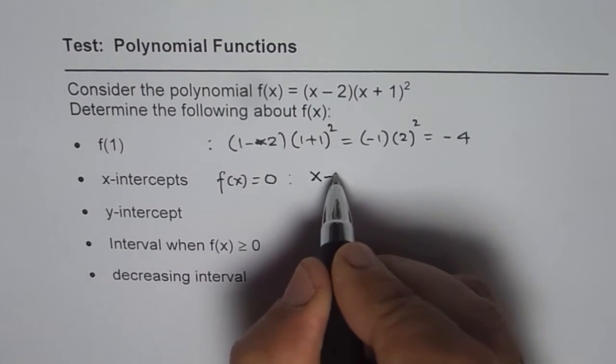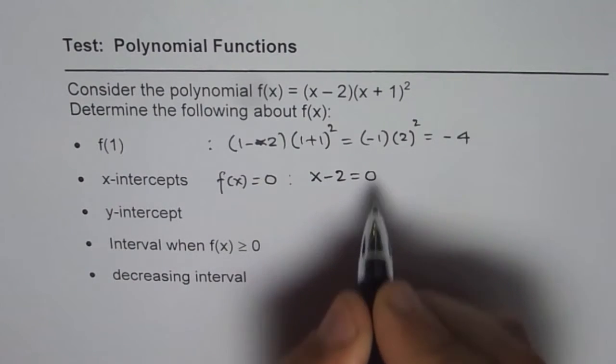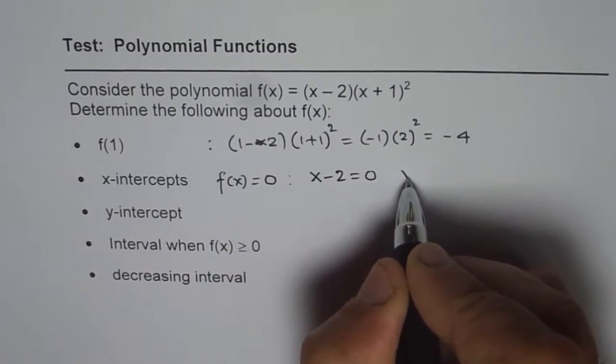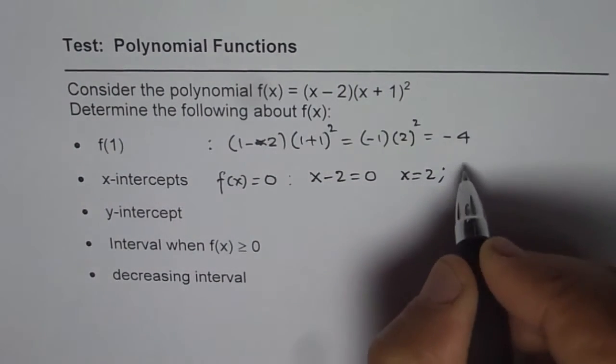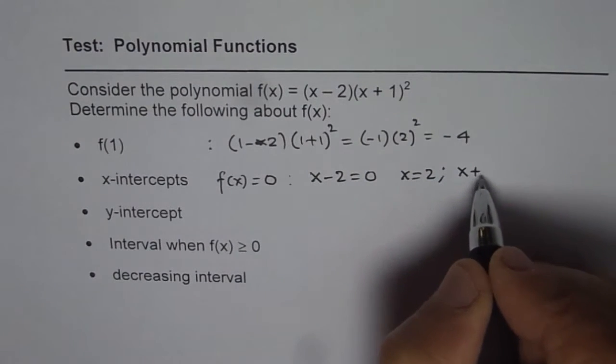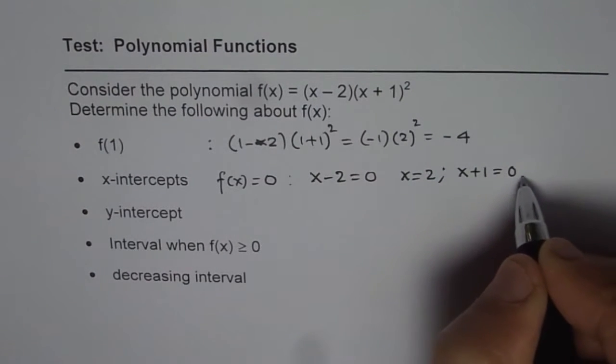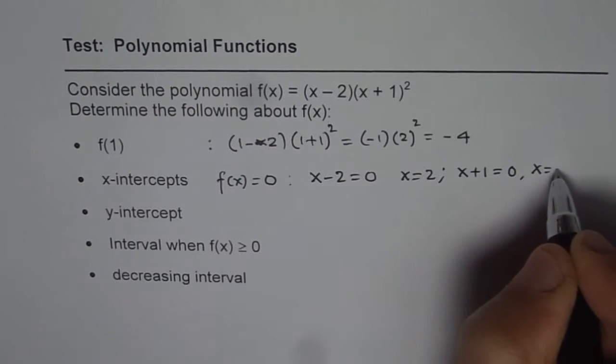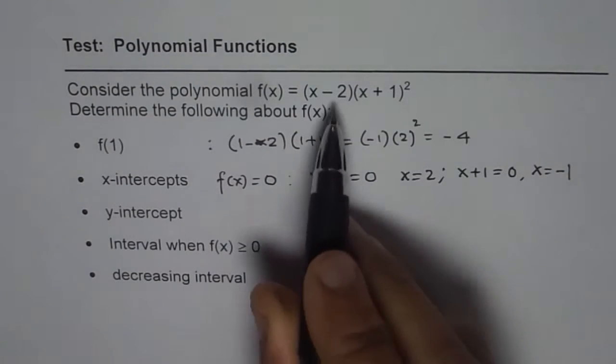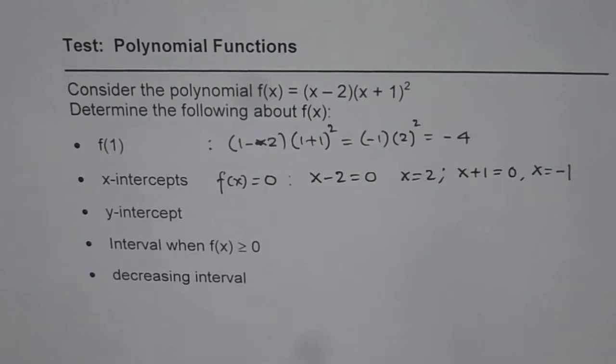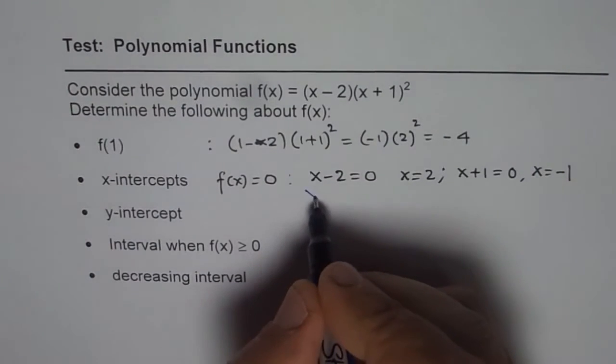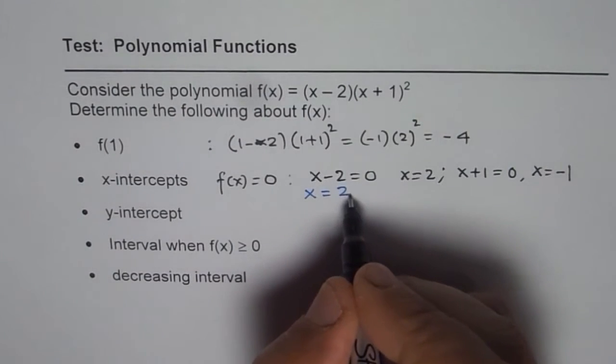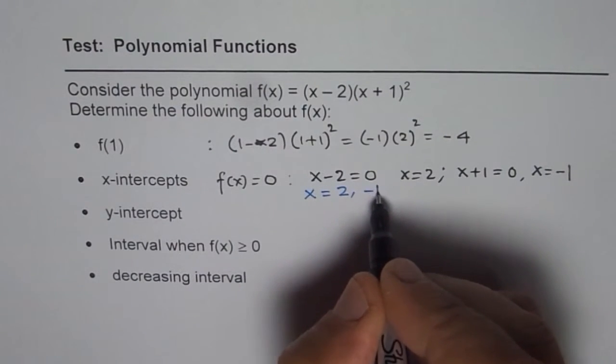So the first zero is at x - 2 = 0. That results in x = 2, and the second one will be at x + 1 = 0. That results in x = -1. So we have two zeros here. So let me write down very clearly the zeros are at x = 2 and at -1.